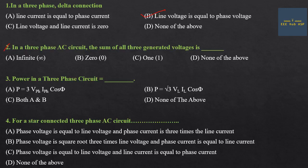Second question: In a 3-phase AC circuit, the sum of all three generated voltages R, Y, B is zero. That is the answer. Third question: Power in 3-phase — P equals 3 into V-phase into I-phase into cos φ, and also P equals root 3 into V_L into I_L into cos φ. Both equations are correct. Option C: Both A and B.